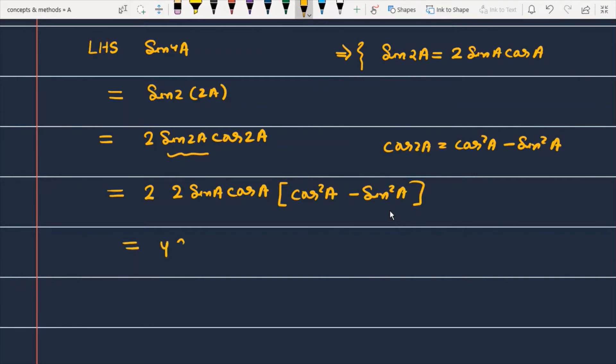This is 4, this is sin A, sin A into cos A into cos 2A. We can write cos 2A into cos 2A.